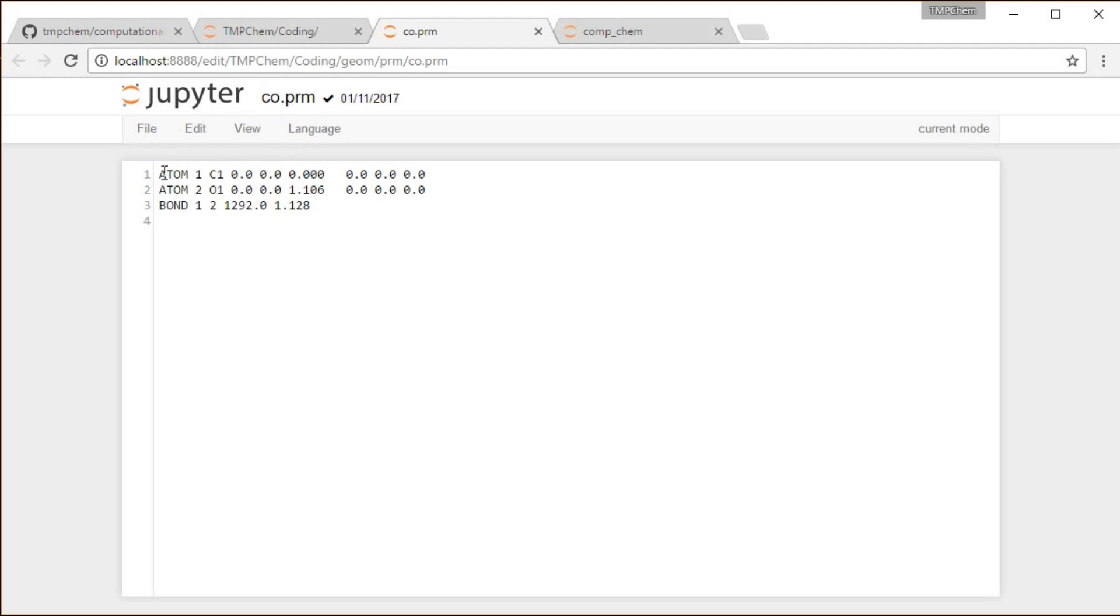I declare each of the atoms - atom, atomic index, and then the atom type. I'm calling this just carbon 1, oxygen 1, the x, y, z coordinates. And then these are going to be some parameters we'll talk about later, some non-bonded parameters.